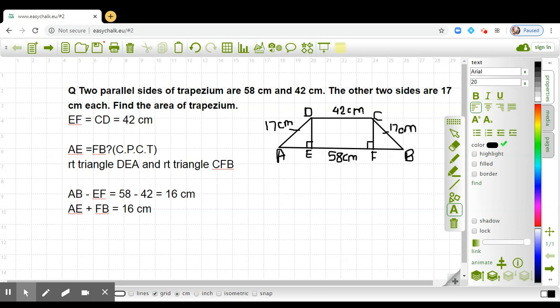Both are equal, so AE will be 8 and FB will be 8. Therefore, AE is equal to 8 cm.